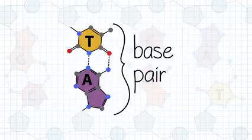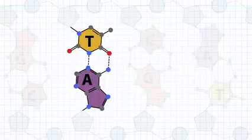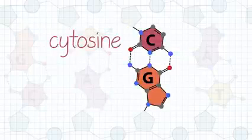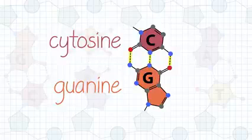The hydrogen bonding contributes to the specificity of base pairing. Thymine preferentially pairs with adenine through two hydrogen bonds and cytosine preferentially pairs with guanine through three hydrogen bonds.